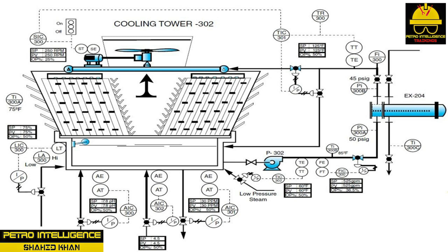Basin heaters come in a variety of designs — low-pressure steam, electric, or hot oil. The primary purpose of a basin heater is to keep the cooling tower clear of ice during the cold winter months. Louvers are evenly spaced and designed to direct airflow across the downward flow of water.